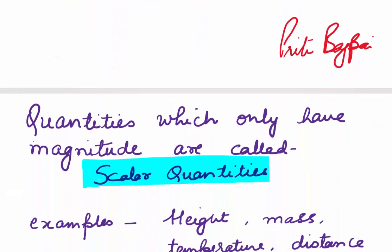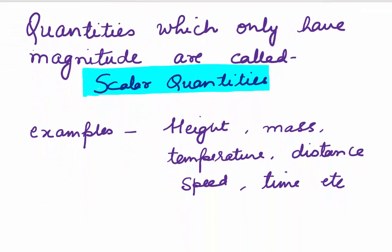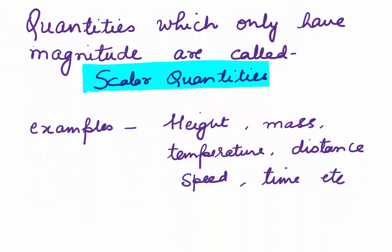So let's begin. In our daily life we do come across a lot of quantities like height — you say the person's height is 145 cm, you say the temperature today is 32 degrees Celsius, you say I covered a distance of one mile. So all these quantities where we are only talking of magnitude are known as scalar quantities.